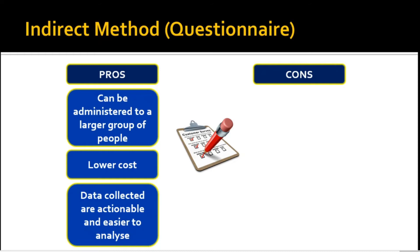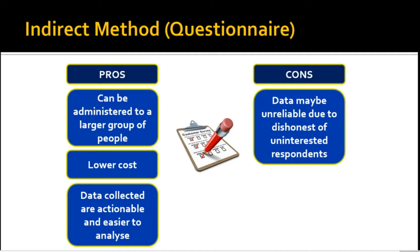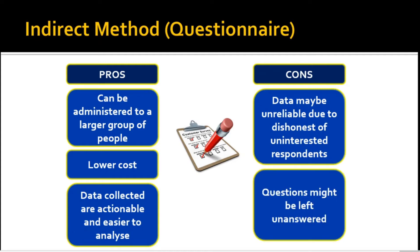However, because questionnaires are also simply given to the respondents, data gathered may be unreliable because of dishonesty. Also, items have chances of being left unanswered due to lack of interest. This is the reason why the researcher orients the respondents before giving them a questionnaire.